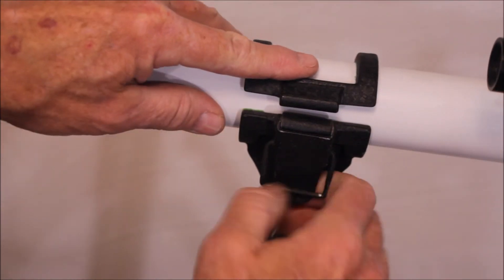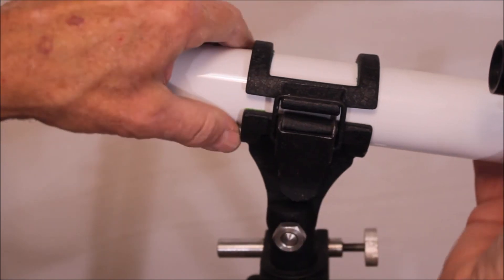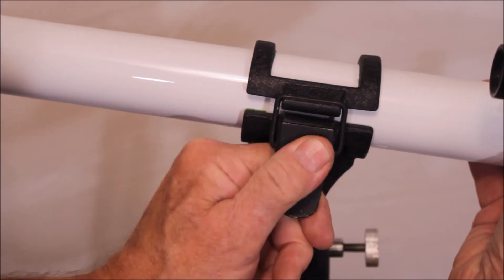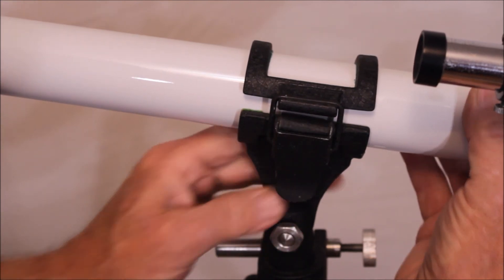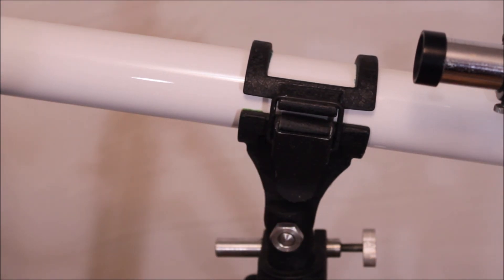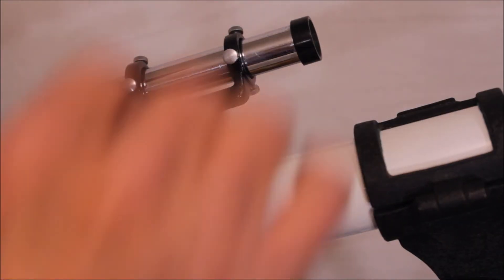And probably more important than that is you can loosen this a little bit and slide it back and forth. So you can balance the scope. So if you have a heavy eyepiece in there, you can easily, more easily balance it.